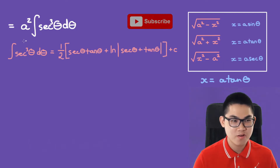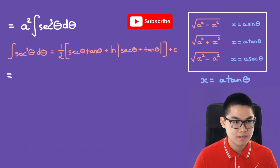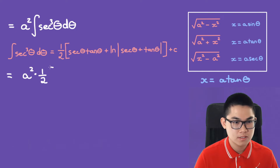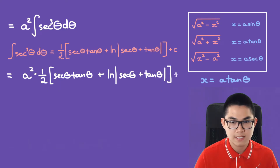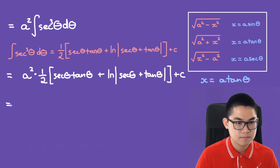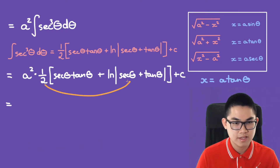So we have a squared times the integral of secant to the power of 3 d theta. In another video, we already solved the integral of secant cubed, and the result is: 1 over 2 times secant times tan plus the ln of absolute value of secant plus tan, plus c.